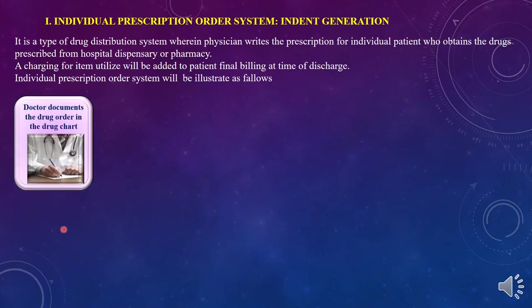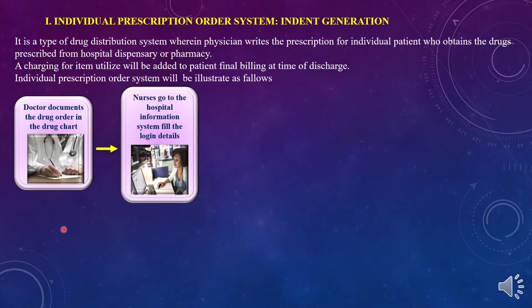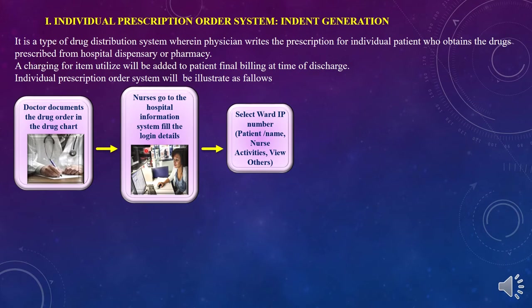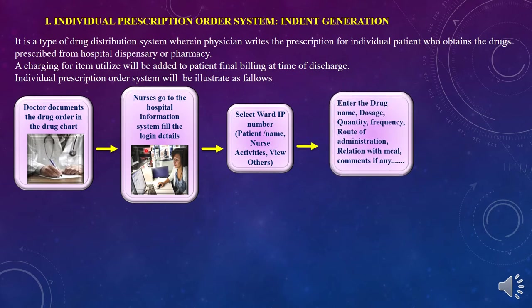In this system, the doctor documents the drug order in a drug chart. Then nurses log into the hospital information system and enter the patient's login details during the transcription process. They select the IP number, inpatient pharmacy number, patient name, and nursing activity. They then enter the drug name, dose, quantity, frequency, route of administration, and any instructions such as relation to meals. This process of putting information from the drug chart into the system is known as transcription.